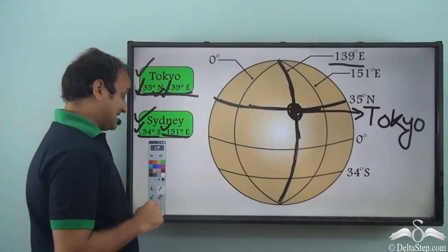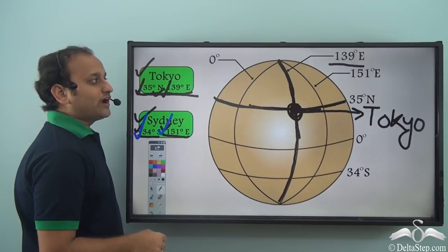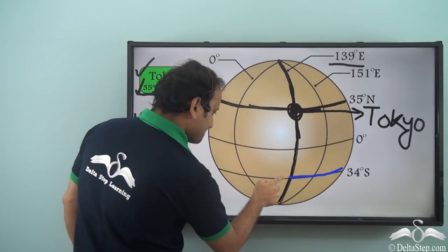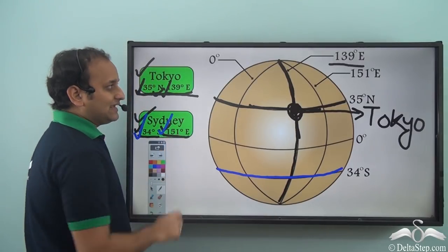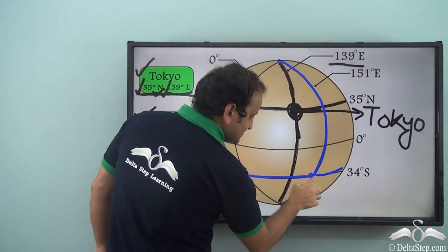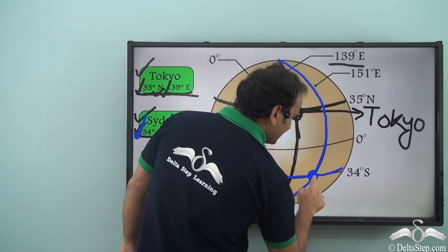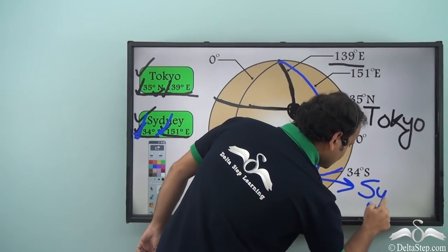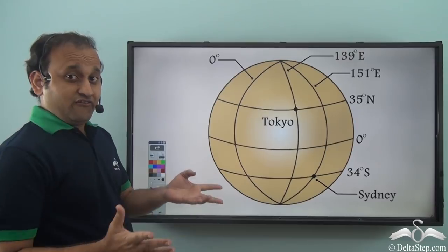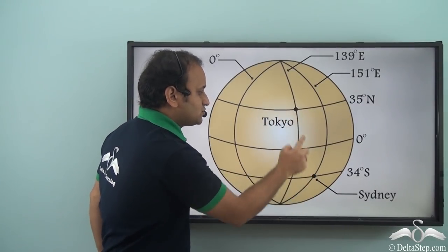Similarly, let's locate Sydney. Sydney has a latitude of 34 degrees south and a longitude of 151 degrees east. The 34 degrees south line is here. The 151 degrees east longitude is this line. These two lines are meeting at this point — and this intersection point of this latitude and this longitude is the location of Sydney.